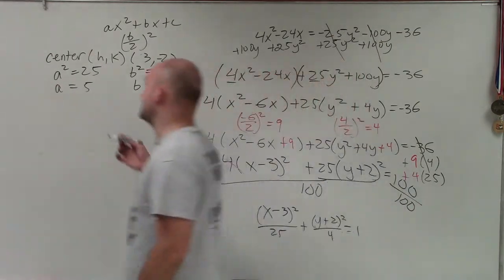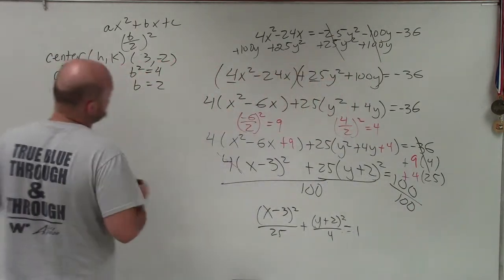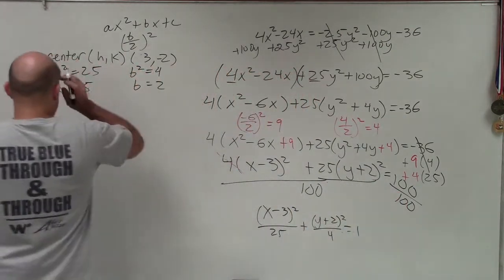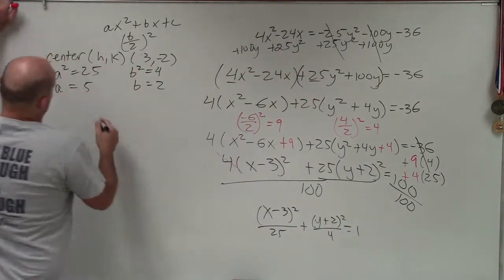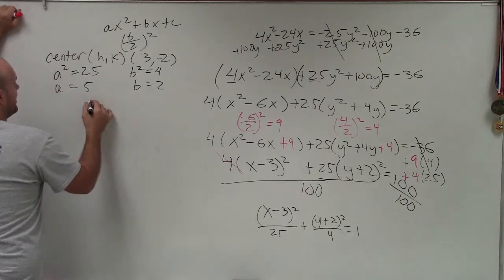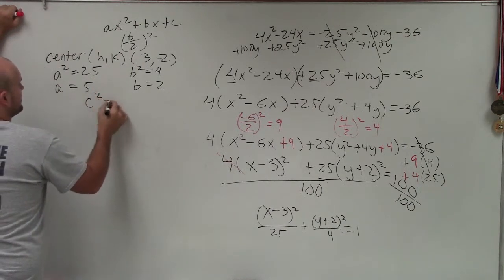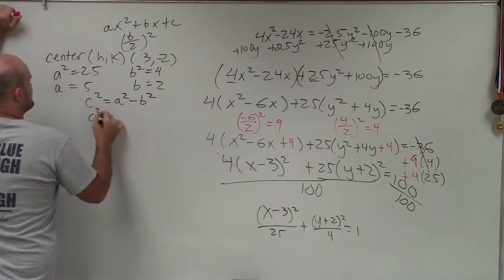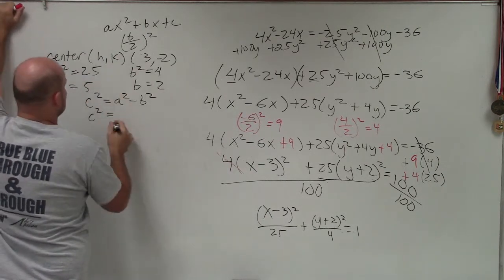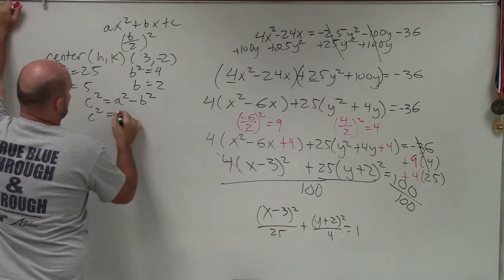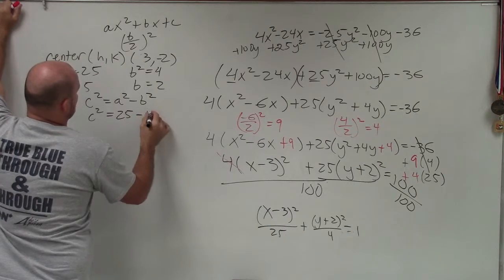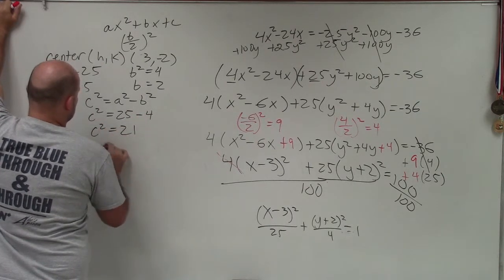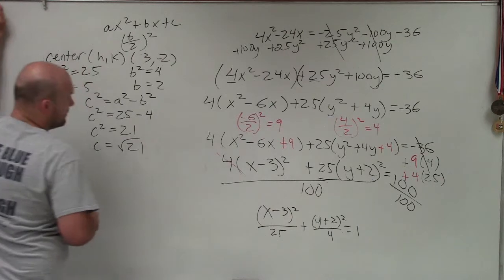I also need to determine c, because c is the distance from the center to the foci. The relationship is c squared equals a squared minus b squared. So c squared equals 25 minus 4, which equals 21. Therefore c equals the square root of 21.